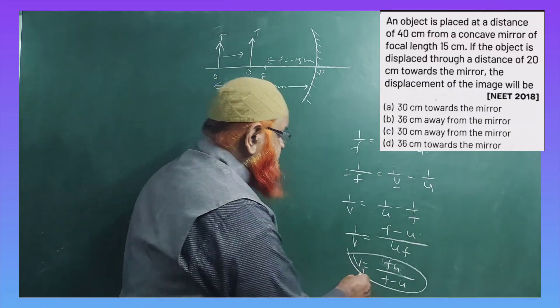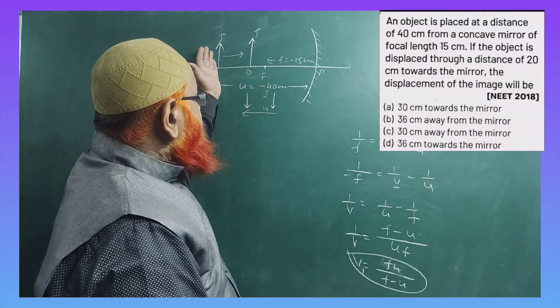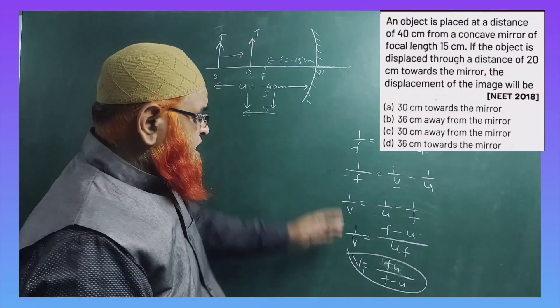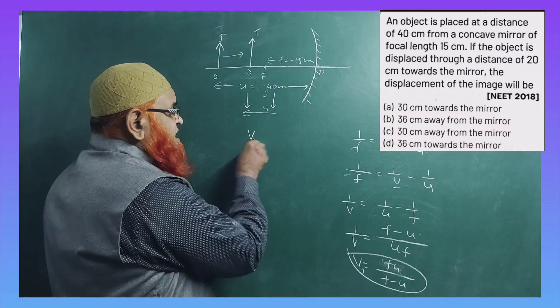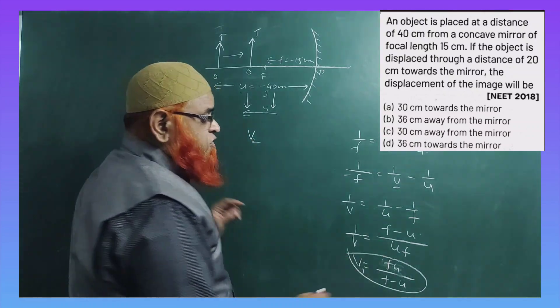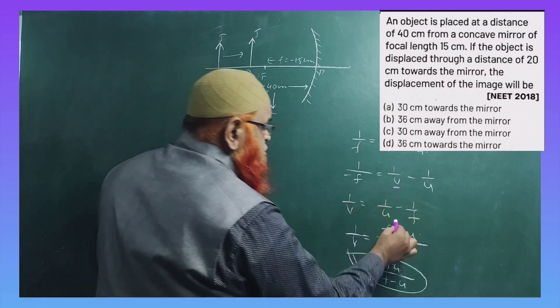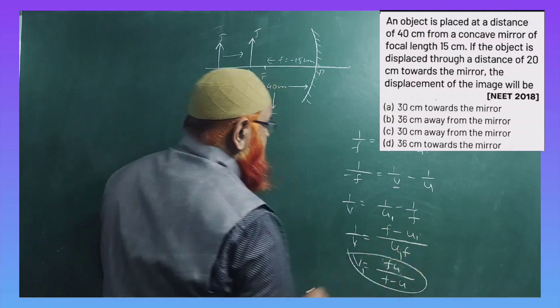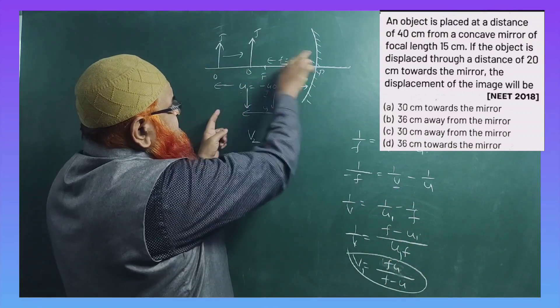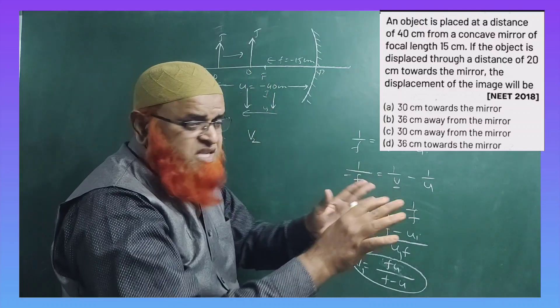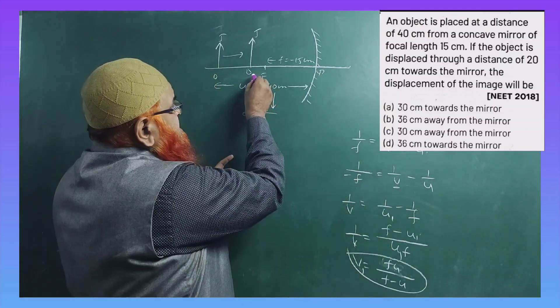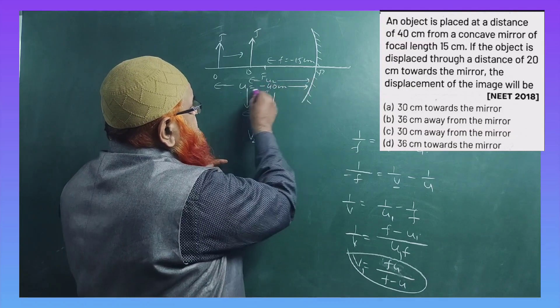But when the object is shifted from here to here, then the second image distance will become the same formula. If here this distance is taken as u1, you have to keep this as u1. But in the second case, as the distance of the object has been changed, the object distance will also be changed to u2 here.